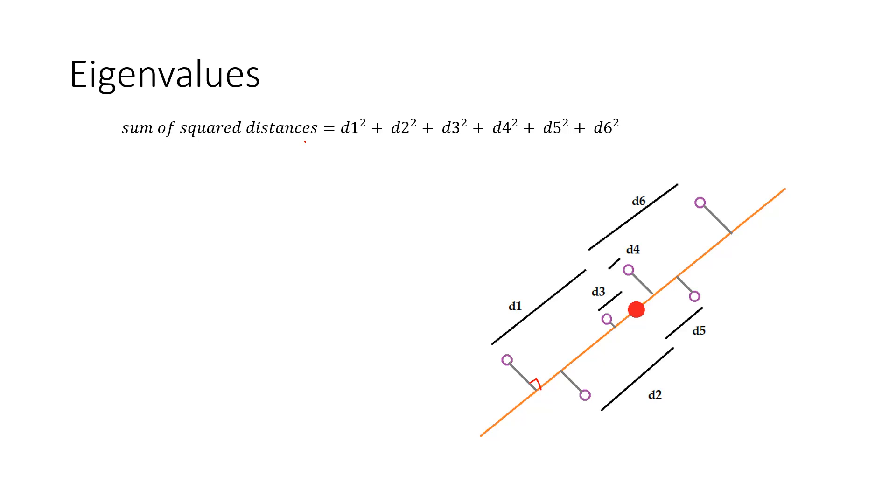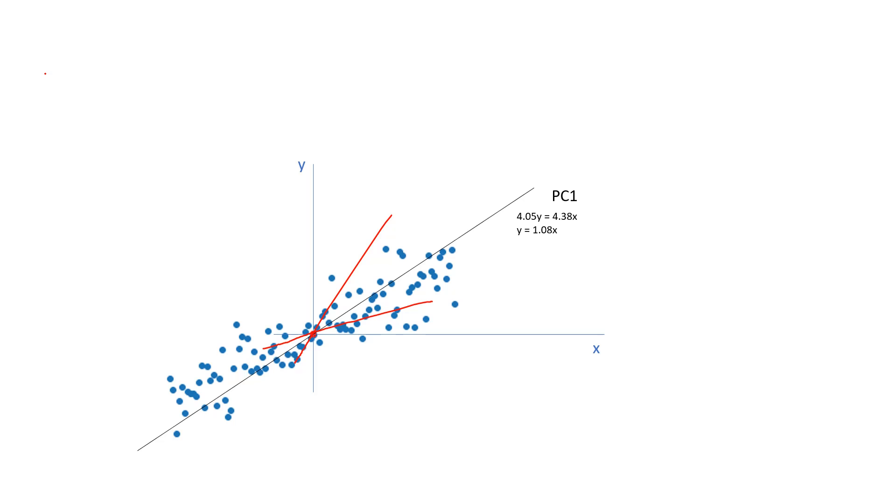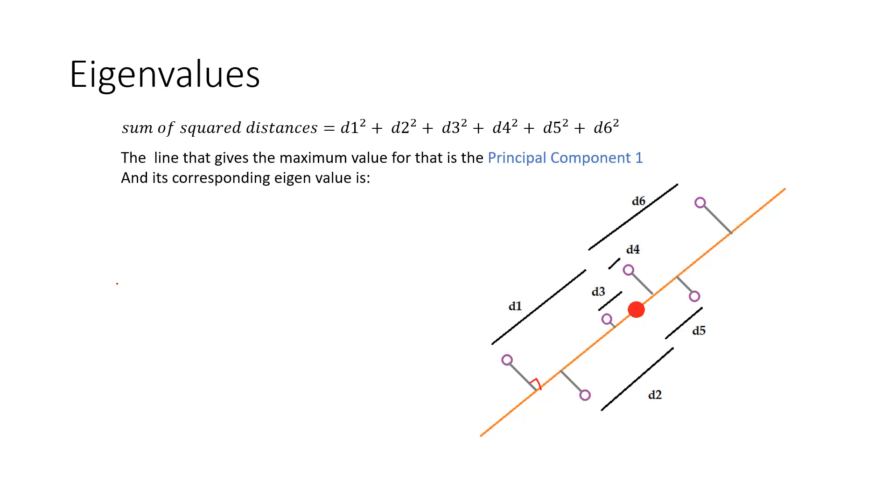Now, we will do this for each and every line. For example, for each and every line, we will calculate the sum of squared distances. And then the line that gives us the maximum value for the sum of squared distances will be called the principal component 1.